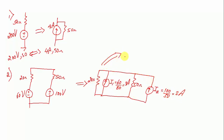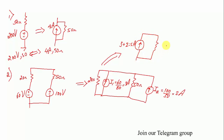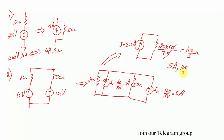Both currents are in the same direction, so the combined current source is 3 plus 2 equals 5 amperes. The equivalent parallel resistance is 20 × 50 divided by (20 + 50), which equals 1000/70 = 100/7 ohms. So the final equivalent current source is 5 A with 100/7 Ω.